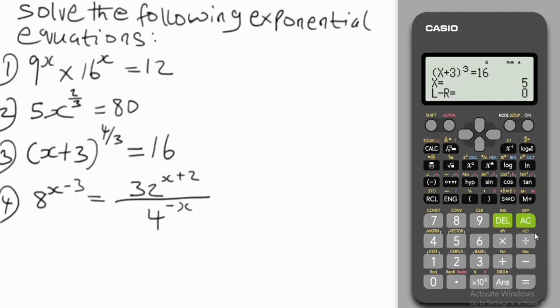All right, thanks guys for supporting me on this channel. Having done that, let's get and solve the last question and call it a class. Remove this. So we have 8 to the power x minus 3. Okay, you come down equal to, alpha this button, then a fraction. We have 32 to the power x plus 2. All right, come down denominator, we have 4 to the power negative x.